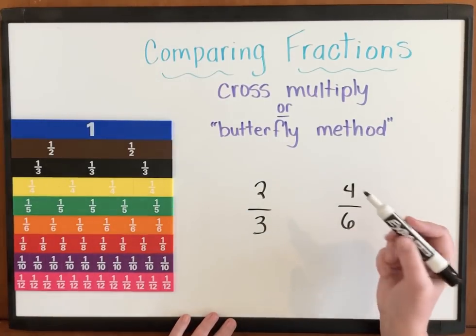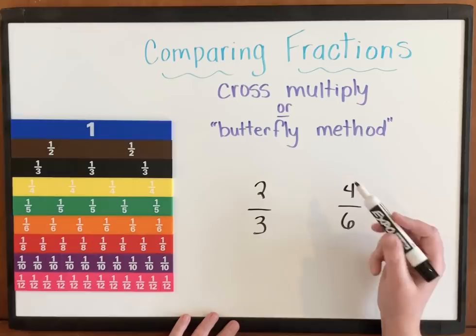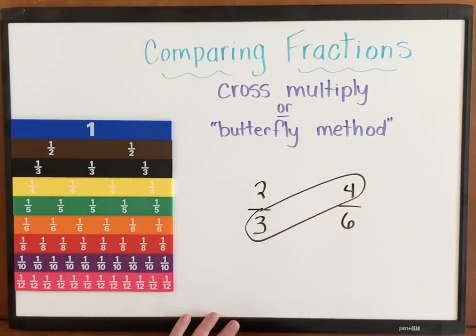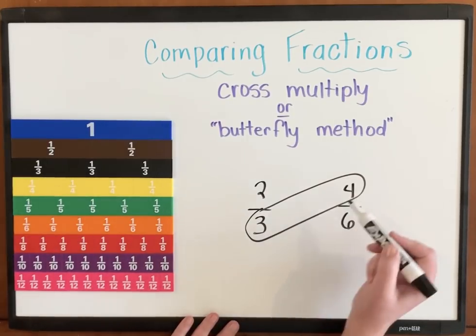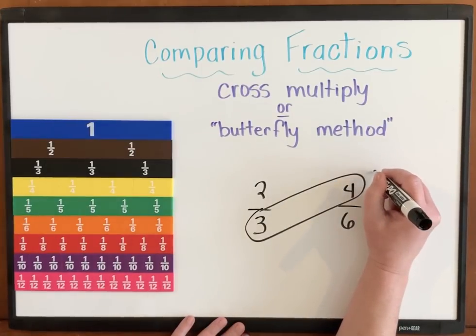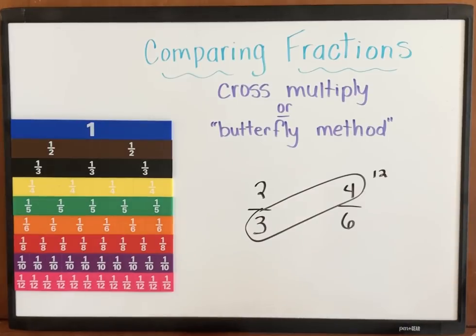But let's look what that means where we get the word butterfly method from. So one way that you can compare your fractions to keep track of what you're doing is to circle your bottom denominator with your top numerator. What is 3 times 4? Well, 3 times 4 is 12. I like to put my numbers up in the top corner, pretty small, so it doesn't distract you from your actual fraction or your numerator.